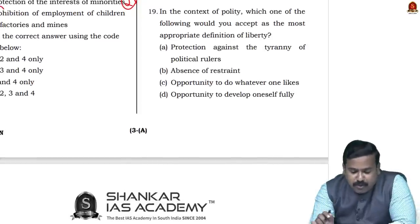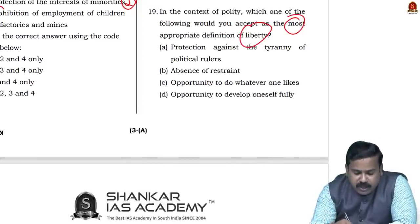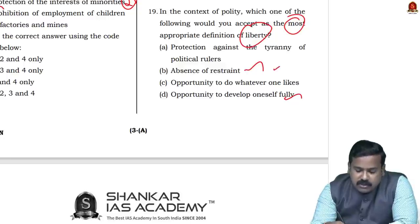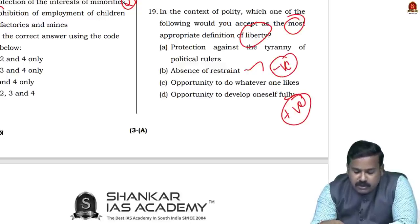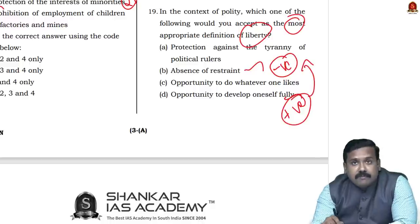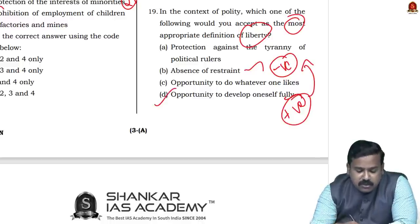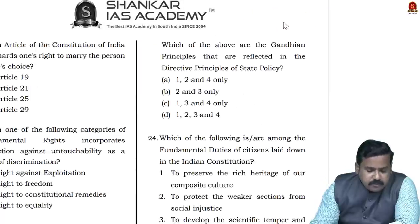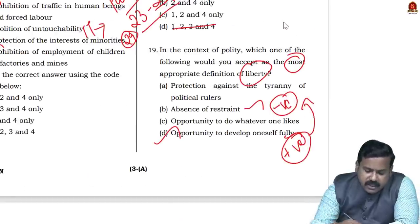Question 19: The most appropriate definition of liberty in the context of polity. Two options — absence of restraint (negative dimension) and opportunity to develop oneself fully (positive dimension). Both are correct, but without the positive dimension the negative is incomplete, and vice versa. The answer is D, combining both. This is also an NCERT political theory question.